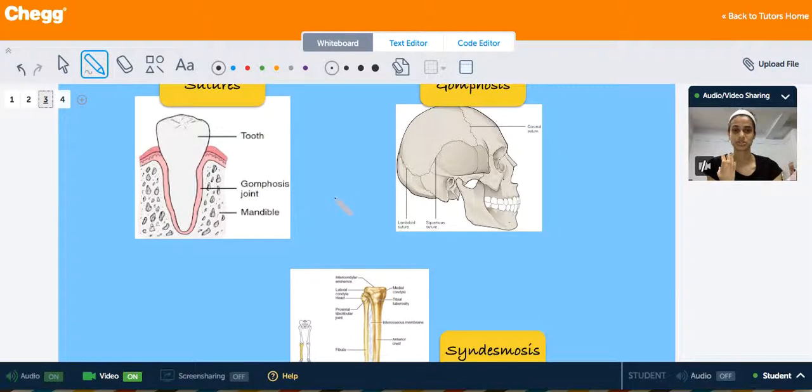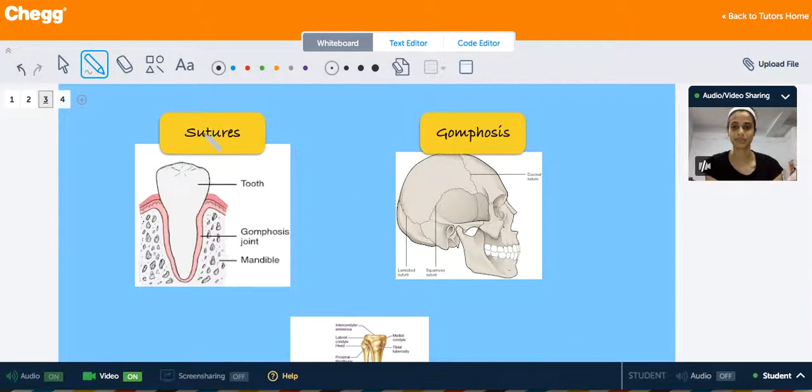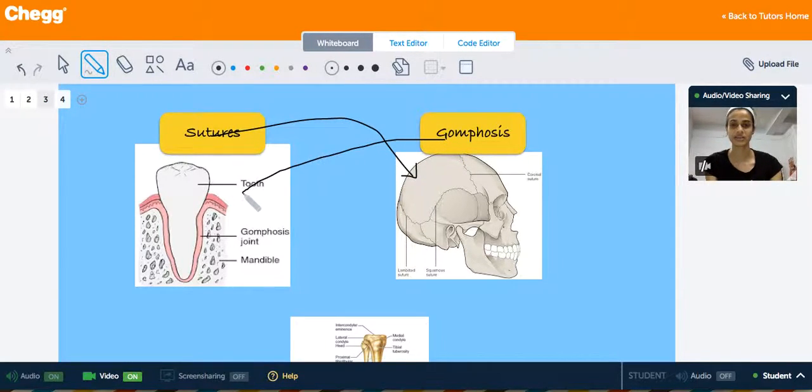Those are sutures. Whoops, I'm sorry, I labeled this wrong. This is an example of sutures, and this is an example of gomphoses, which is the joint that anchors your teeth into your jaw.